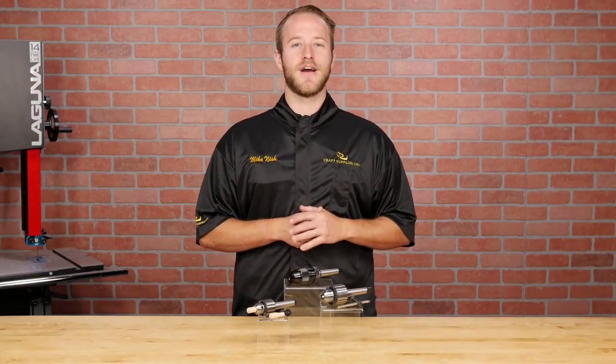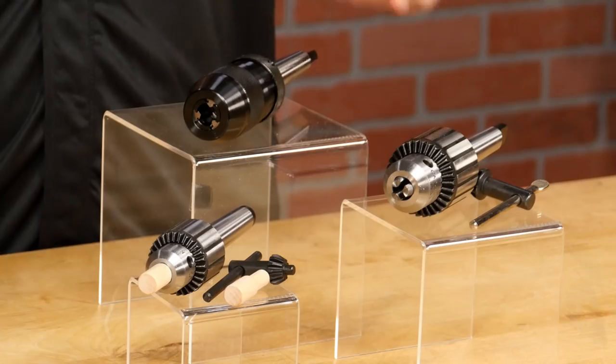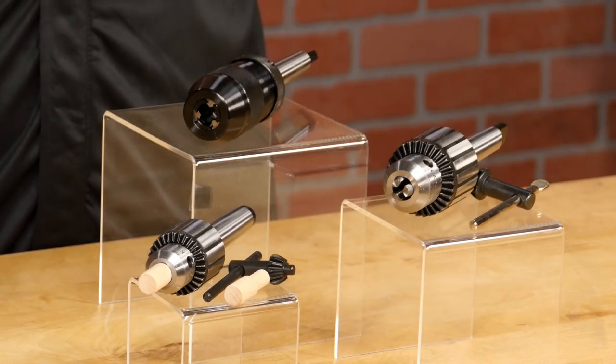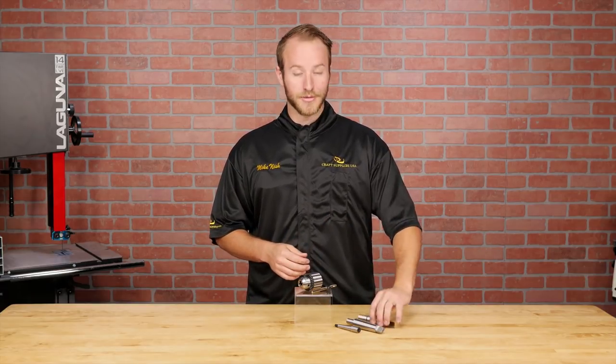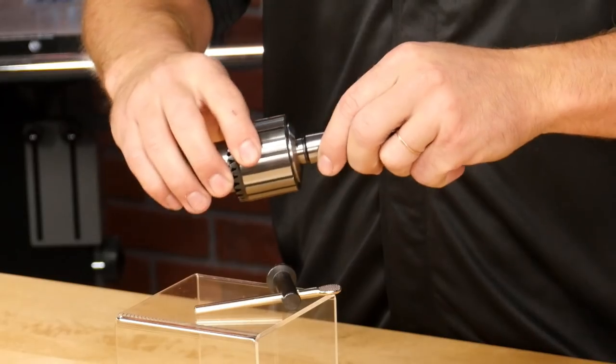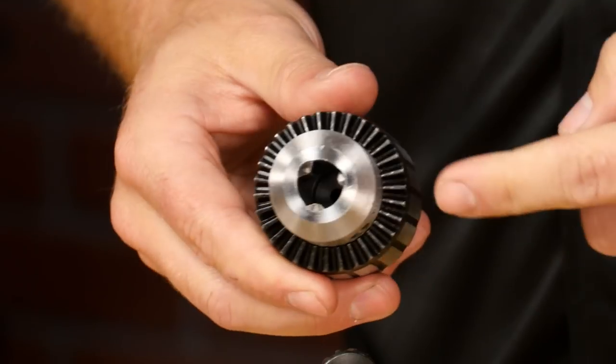Here at Craft Supplies USA, we offer three different drill chucks: keyed, keyless and a dowel chuck. Let's start with the keyed version. It's offered in multiple morse taper sizes to fit almost any lathe and has a half-inch capacity.